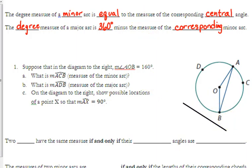So let's look at this diagram. It's the same picture from above, but we're going to talk about some actual measurements. They tell us that the measure of angle AOB is 160 degrees. So this angle right here is 160 degrees. They ask us, what's the measure of arc ACB, the minor arc? Well, that is equal to the measure of the central angle. So that arc is 160 degrees.